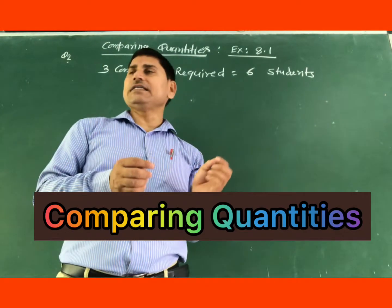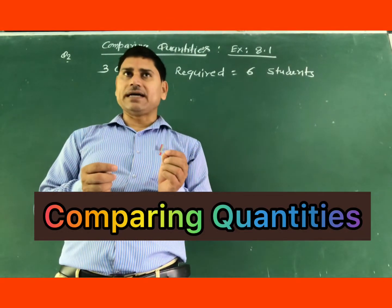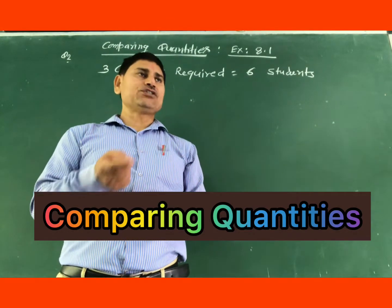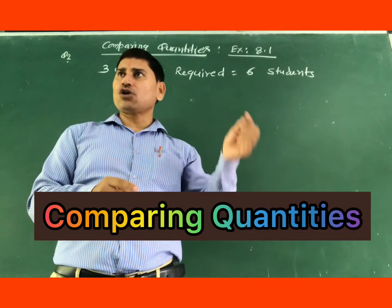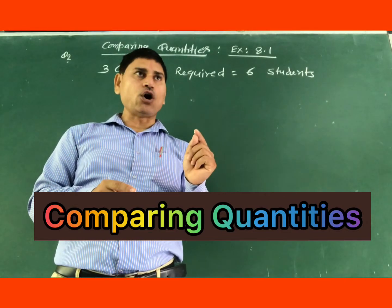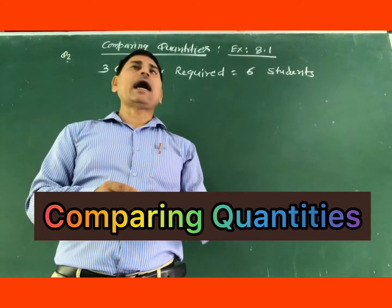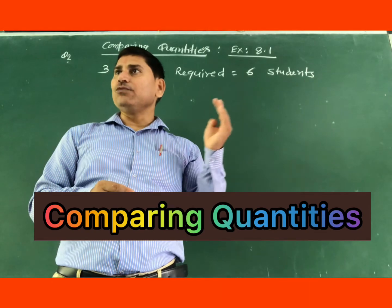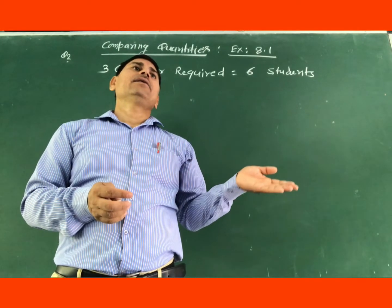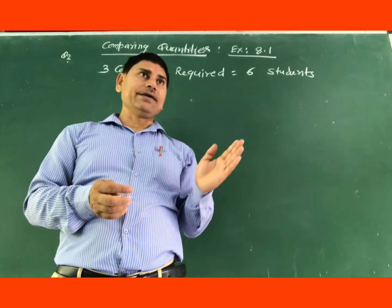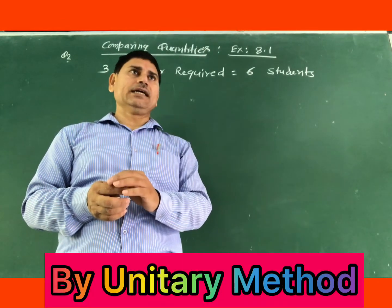So what is the unitary method? First of all, you will find the cost of one object. After that, you will find the required object.